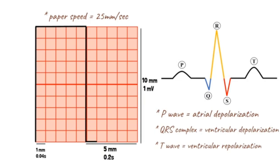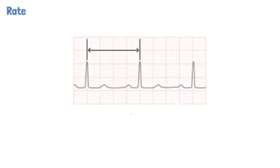When interpreting an ECG, the first three things to be assessed are the rate, the rhythm, and the axis. The heart rate can be calculated from the ECG using various methods. In most circumstances, when there is a regular rhythm, the simplest way to calculate the heart rate is by counting the number of large squares between the peaks of each QRS complex.